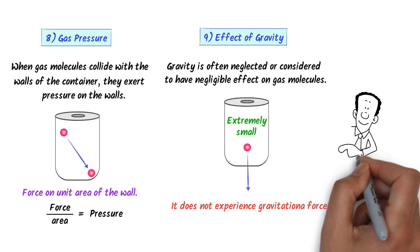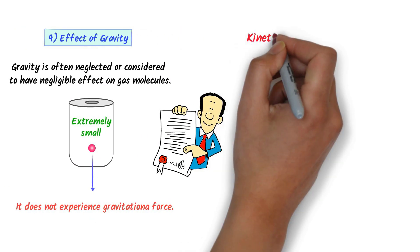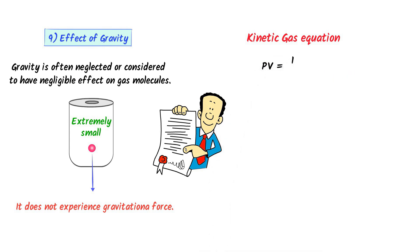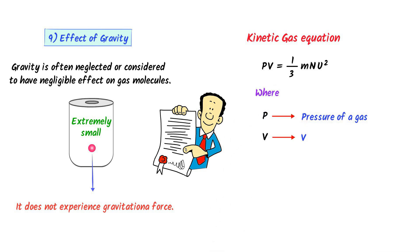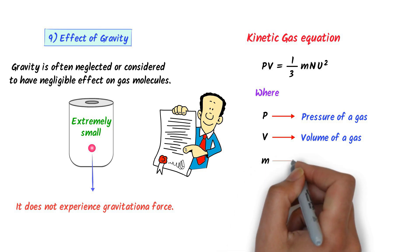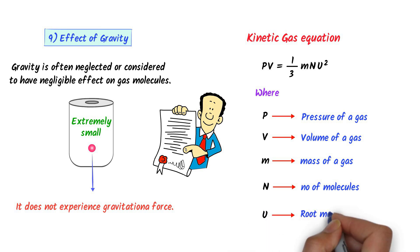These are the eight important postulates of the Kinetic Molecular Theory of Gases. On the basis of these postulates, we derive the kinetic gas equation: PV = (1/3) × M × N × U², where P is the pressure of the gas, V is the volume of the gas, M is the mass of the gas, N is the number of molecules, and U is the root mean square velocity of the molecules.